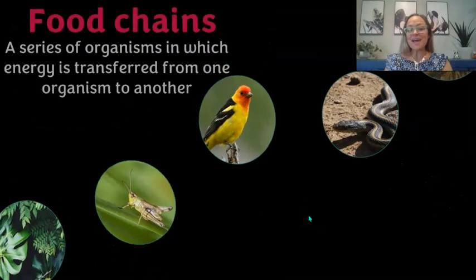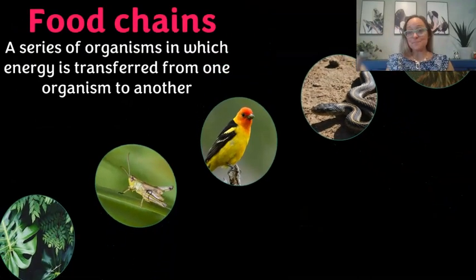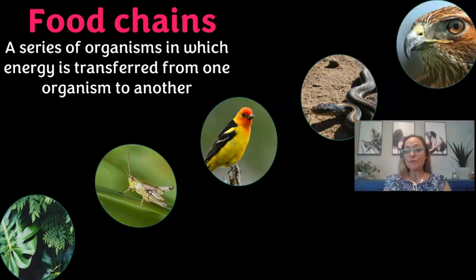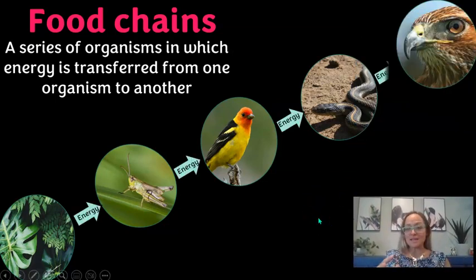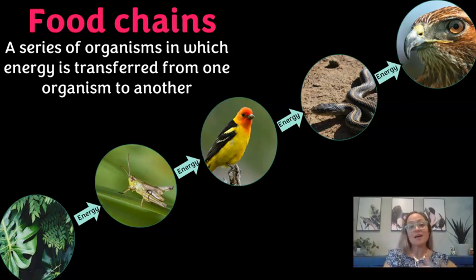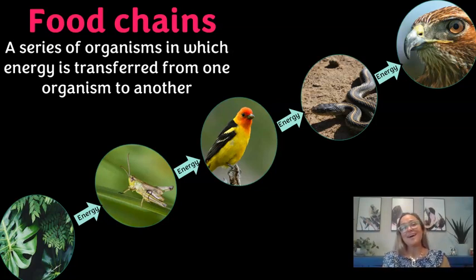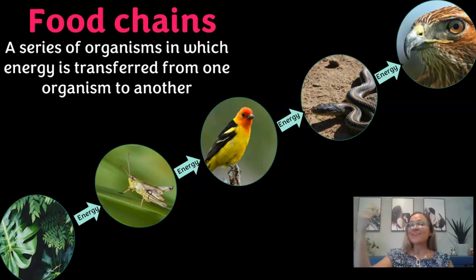An example of this one-directional flow is what's called a food chain. Food chains always start with autotrophs — here the plants are the primary producers — and they're eaten by a grasshopper, which is the herbivore or consumer, and then it goes up through more carnivores.